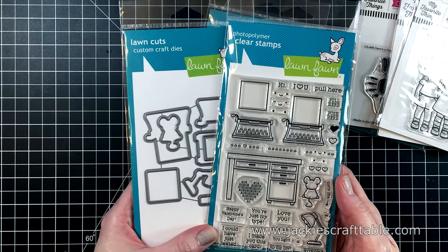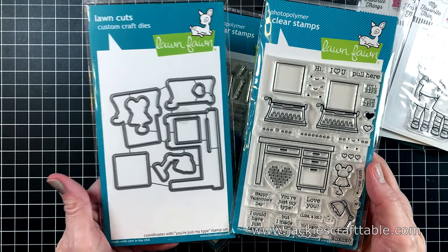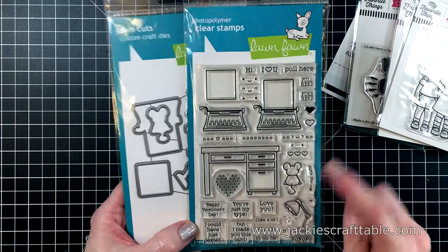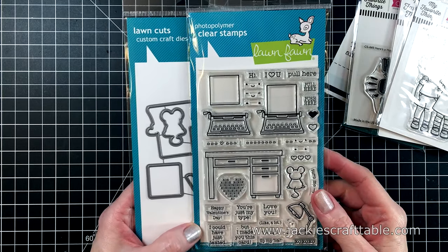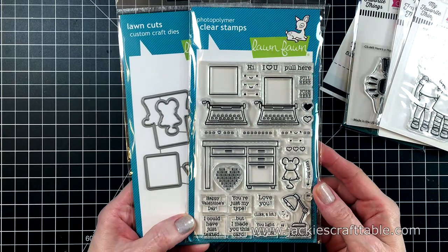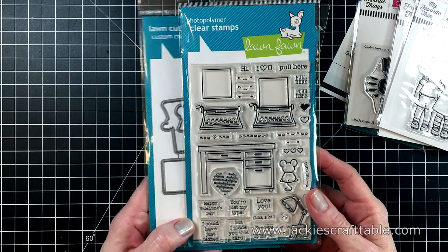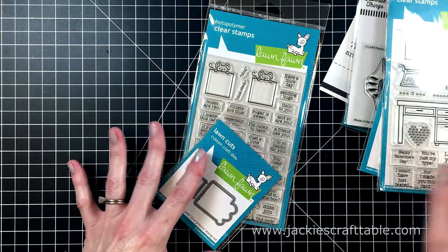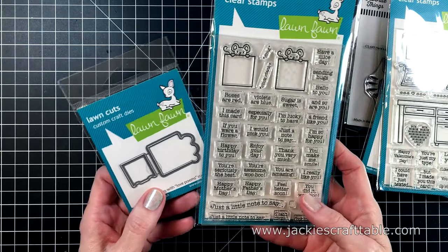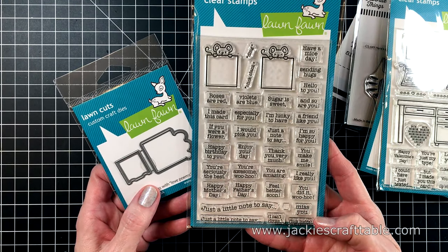And then I picked up a few things from Lawn Fawn's latest Valentine's Day release. I just couldn't resist the cute typewriter and then this little mouse sitting in front of the typewriter—that totally sold me on these. And then all of the darling sentiments, and then of course I had to get the coordinating Love Poems set and dies.